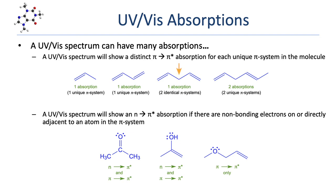The third molecule has two separate pi systems that are not conjugated together, but it will still show only one absorption because those two pi systems are identical by symmetry — a mirror plane bisects the molecule reflecting one double bond to the other. In the last example, there are again two separate pi bonds representing two distinct pi systems. They are not conjugated together and no symmetry element relates the two, so this molecule will have two unique, albeit very similar, pi-to-pi-star absorptions.